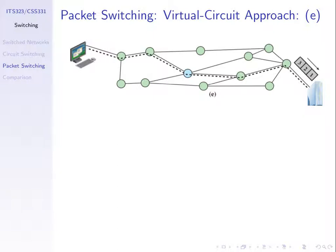All three switching approaches are used in different scenarios today. Telephone networks still use circuit switching. Virtual circuit packet switching is used by some internet service providers and in large networks. But the most important for everyday use is datagram packet switching, because the internet is built around this simple technique of splitting data into packets and sending them independently of each other.